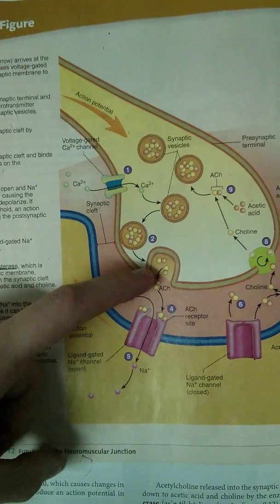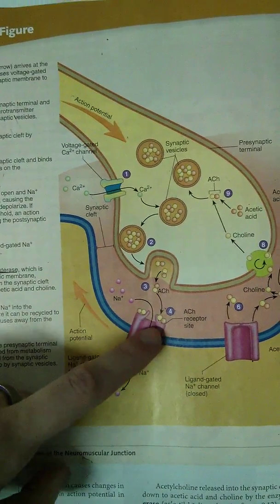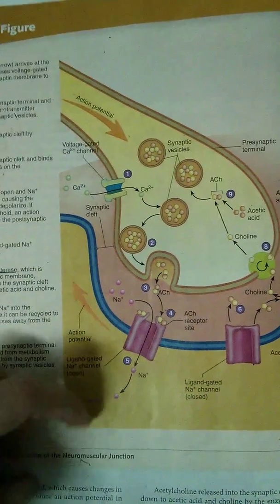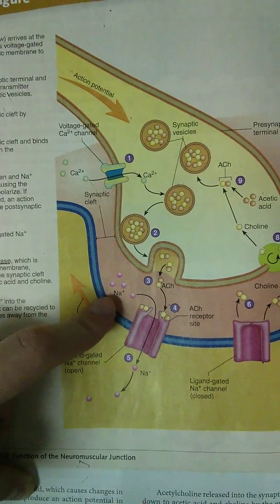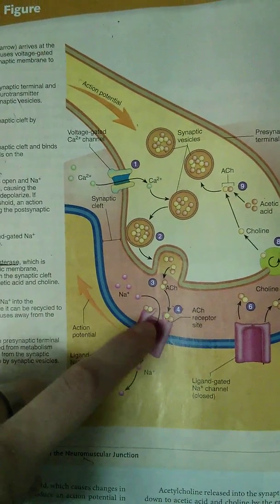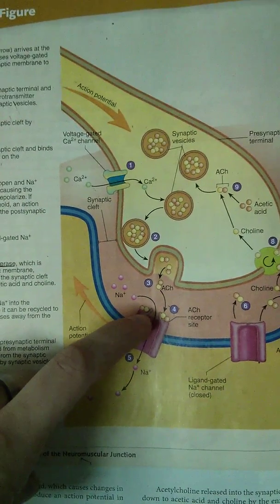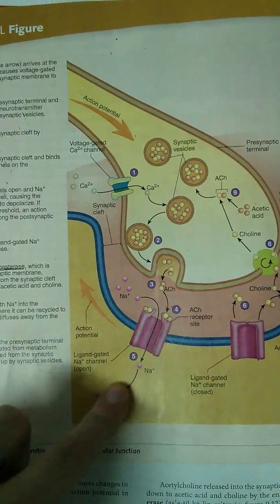So ACH is a chemical, and it binds to the channel, which makes it open. So now this channel is open, and all the sodium, these little pink dots, the Na, are going to rush in now that acetylcholine has opened the channel. And sodium is going to rush in.